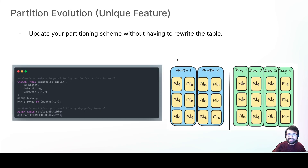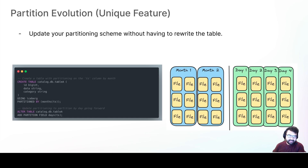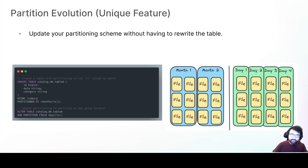Partition evolution is a unique feature to Apache Iceberg. You might have a table currently partitioned by month, but as you get more data you'd like to start partitioning by day. You can change that without having to rewrite the old data that's partitioned by month — new data going forward will simply be partitioned in the new scheme. The metadata knows which files were written with which partitioning scheme, allowing the engine to properly plan the query for each. And if you choose to, you can always rewrite the old data, but you're no longer obligated to.